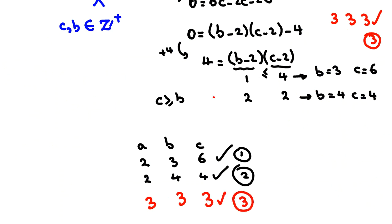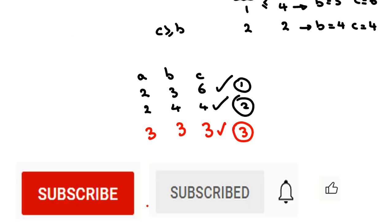So this problem has three answers. This problem involved working with inequalities, which is very important. In IMO problems there are around 40–50 important ideas in each topic: number theory, algebra, combinatorics, geometry. Feel free to send a message to my WhatsApp number in the description. Thanks for subscribing, turning on notifications, and liking the video. Comment below if you have any other solution. Thanks for watching.